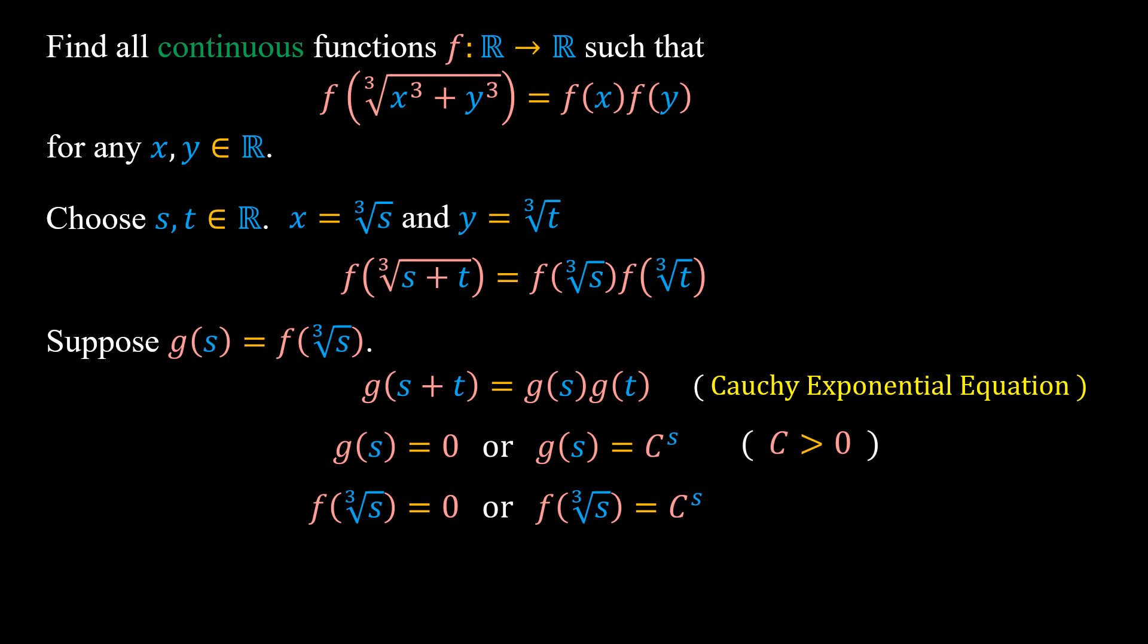By substituting s equals x to the power of 3, we have f of x equals zero or f of x equals C to the power of x cubed. Of course, f of x equals zero is a trivial solution of the functional equation in the problem.